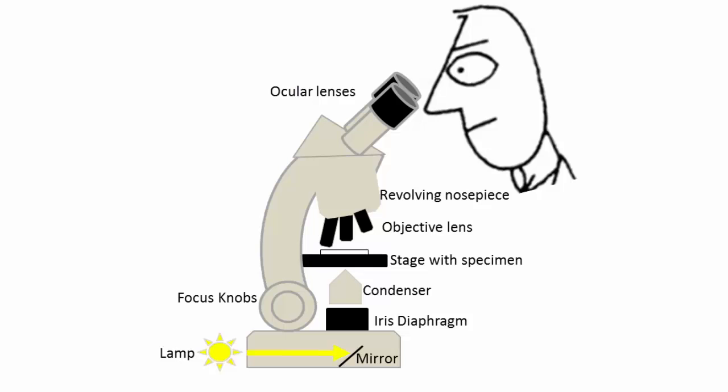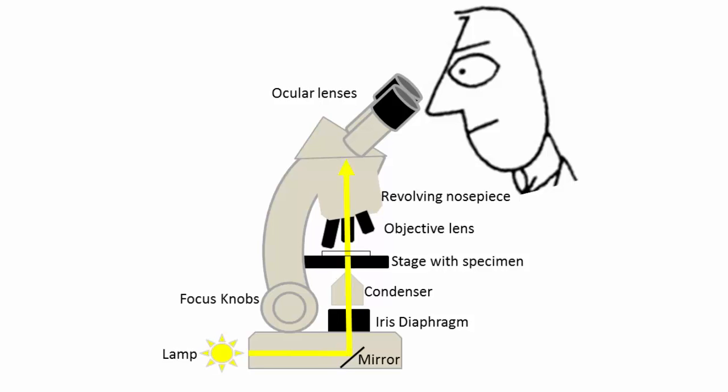Light microscopes send light through a path that first focuses the light into a tight beam and then passes that light through a specimen on a slide, which creates an image.